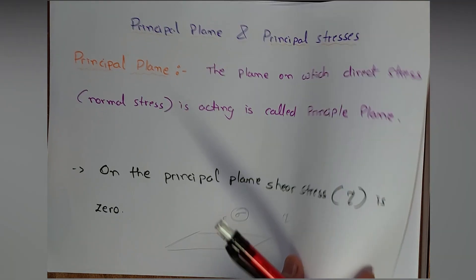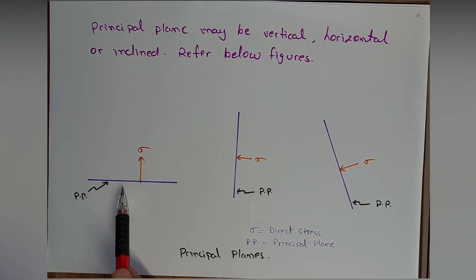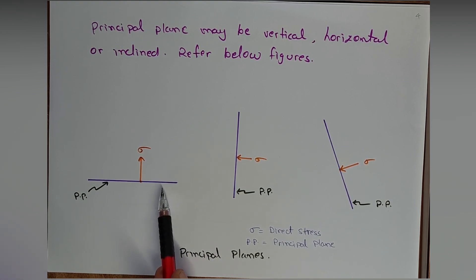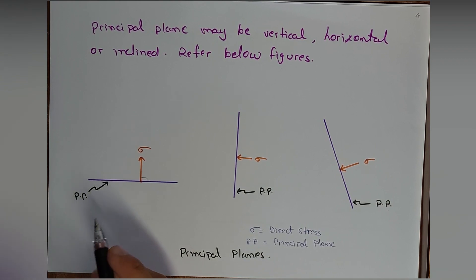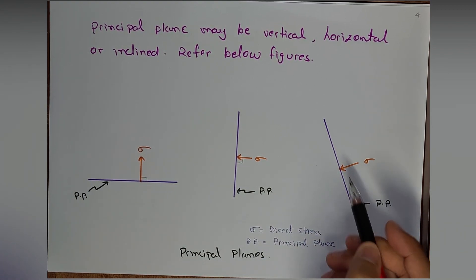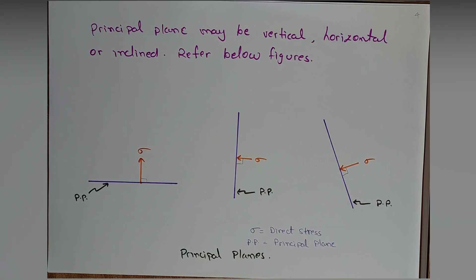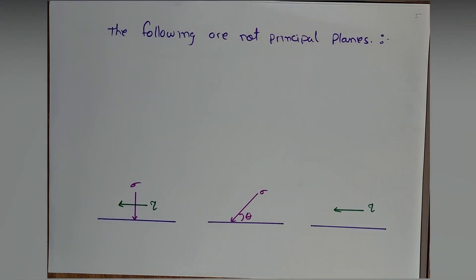A principal plane may be vertical, horizontal, or inclined. This two-dimensional plane acted on by a 90-degree force converted to stress can be called a principal plane. If the plane is on the y-axis (vertical) and the stress acts at 90 degrees, it is still a principal plane. Even if the plane is inclined, as long as the force or stress acts at 90 degrees, it is known as a principal plane — PP is the principal plane, and sigma is the direct or normal stress acting at 90 degrees.